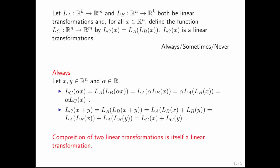What we notice is that composing two linear transformations is itself a linear transformation. Remember, composition is when you take some function G and then take the result of that and plug it into some other function F — you come up with a new function H, and that new function is called the composition of functions F and G.